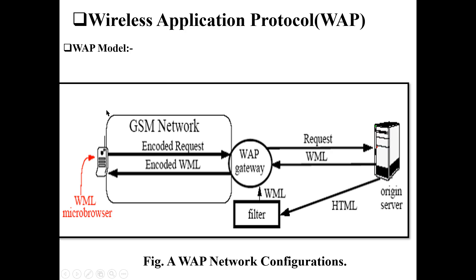Whenever a request is sent by the mobile station over the GSM network, this encoded request is passed to the WAP gateway. The gateway is responsible for accepting this encoded request and generating a new request understandable by the server. The gateway generates another request for the server, and the server checks whether the existing request came from the system or not.